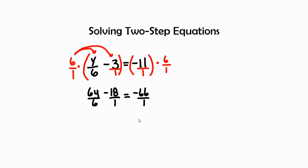Now, you might ask yourself, hey, you didn't get rid of any of the fractions. So, let's start simplifying. 6 over 6 is 1, so I have y by itself. Minus 18 over 1 is just negative 18 equals negative 66 over 1 is negative 66. Now, this looks a lot better. No more fractions. We got rid of the fractions.